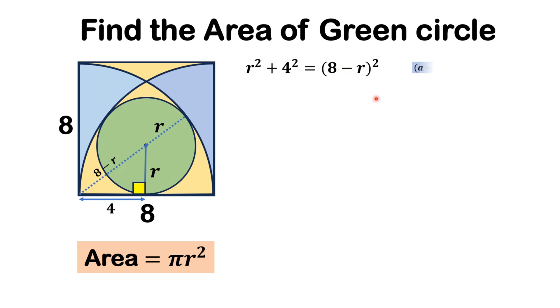So, using the famous identity (a-b)² = a² - 2ab + b², on the right side we will get r² + 16 = 64 - 16r + r².